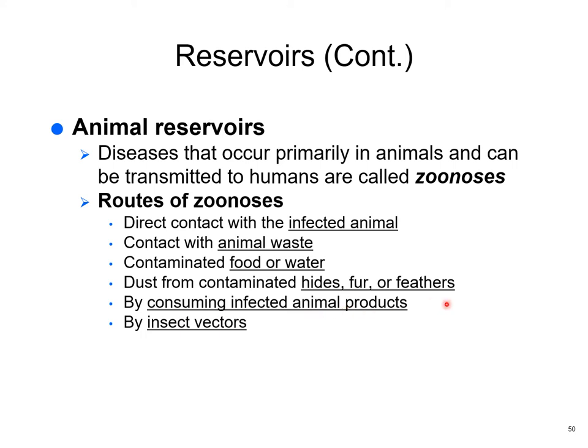Consuming infected animal products: a classmate went bear hunting and cooked his bear steak rare to prove toughness. He got toxoplasmosis and the organisms got into his heart — he never came back to school. Wild game meat really needs to be thoroughly cooked, as does pork and poultry. Hamburger must be cooked well done in case of fecal contamination, though the interior of a whole steak can be less done.